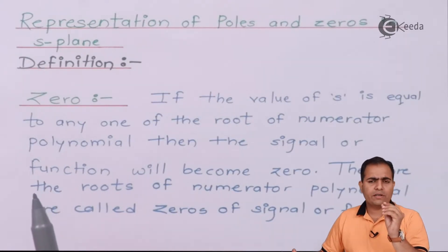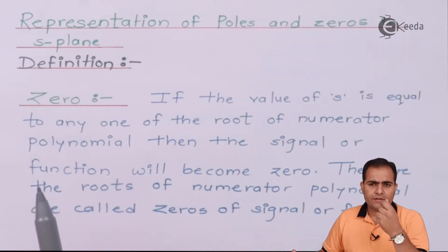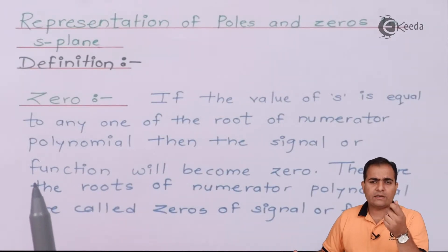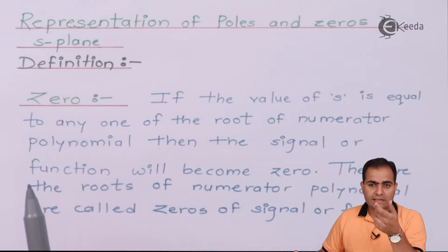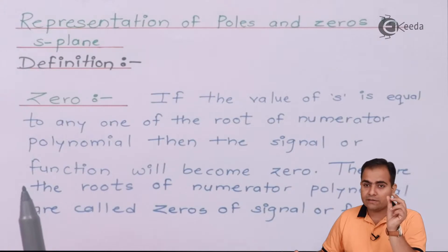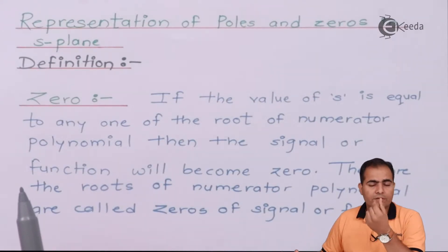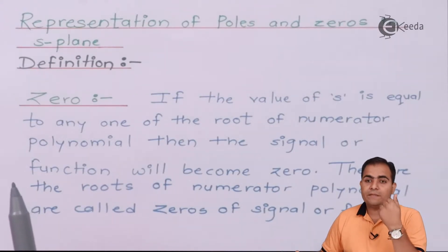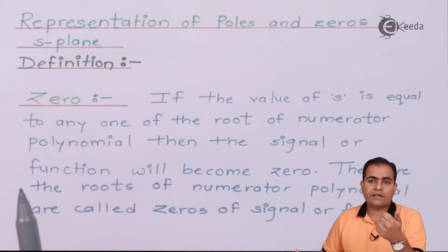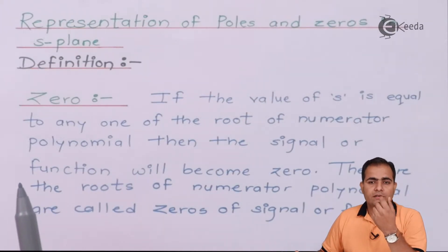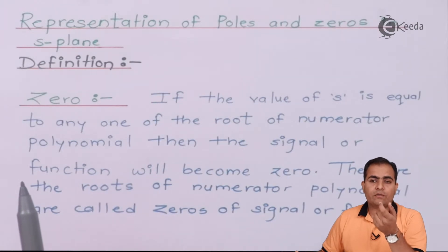Take any root, say (s + 5). In (s + 5), if the value of s equals the polynomial value, that means if s equals minus 5, then the polynomial value is 5. If you add both values, the outcome is 0.